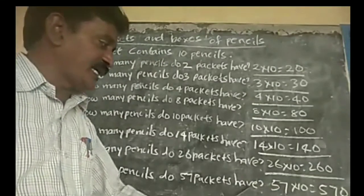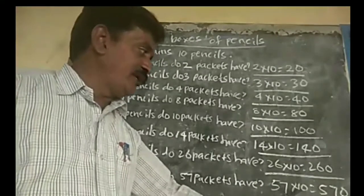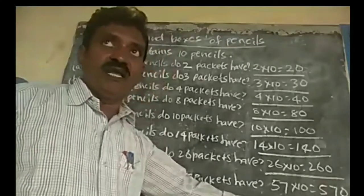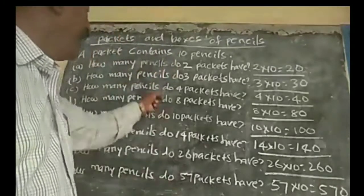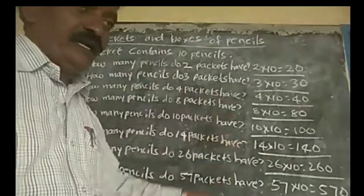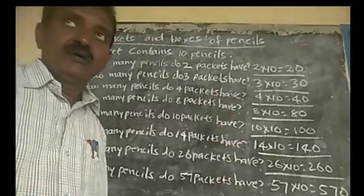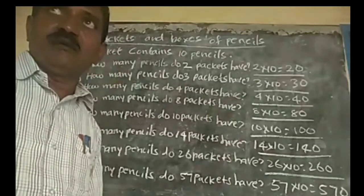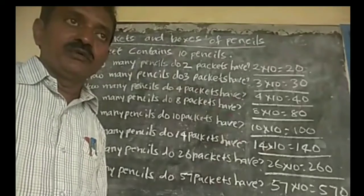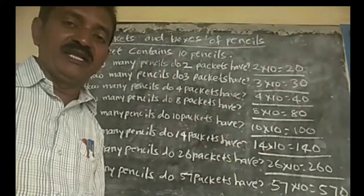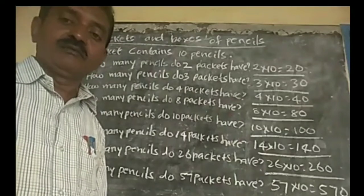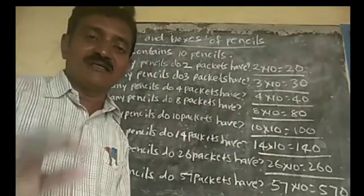How many pencils do 57 packets have? 57 into 10 is 570. So when you always multiply by 10, multiply the number of packets and you get the answer. Learn your tables from 1 to 20. Thank you very much, bye children.